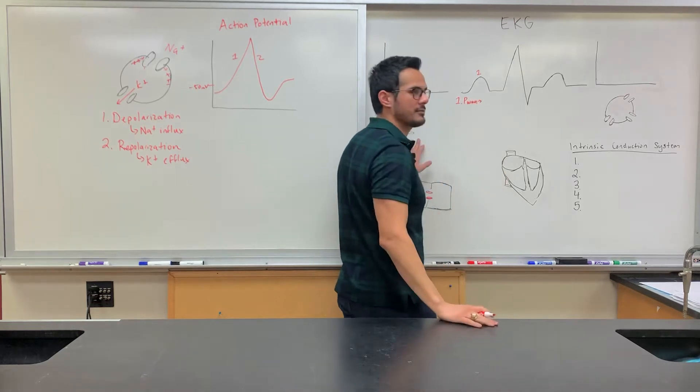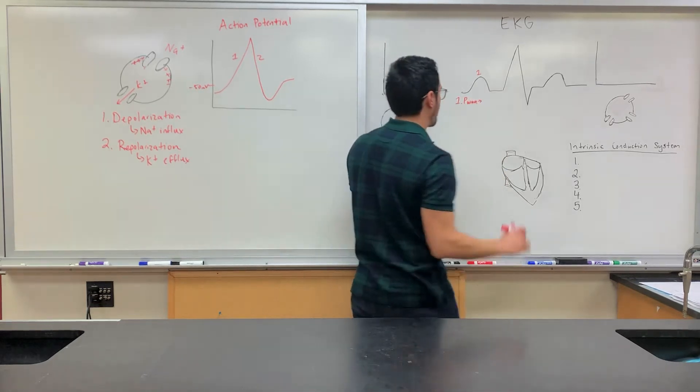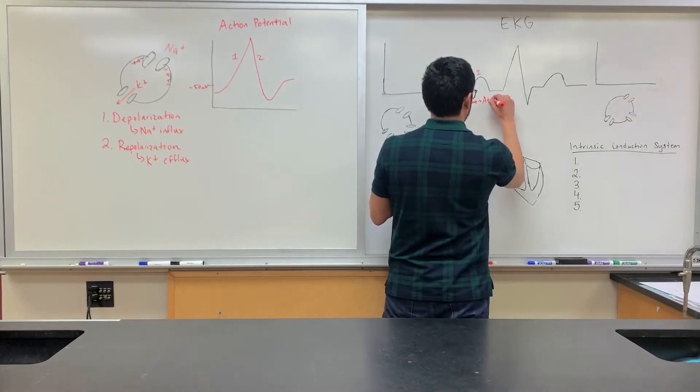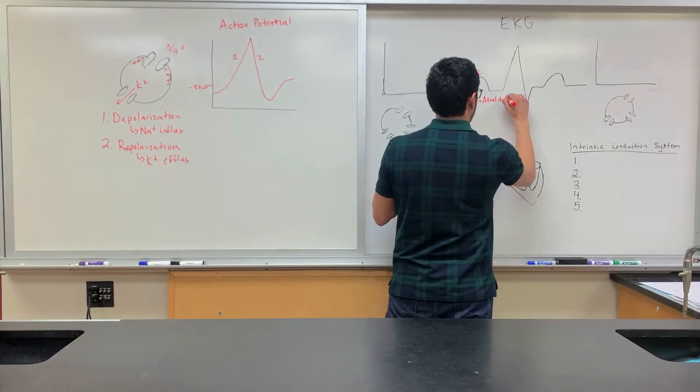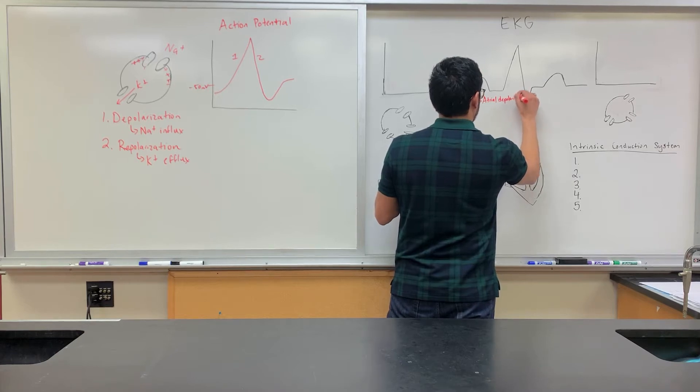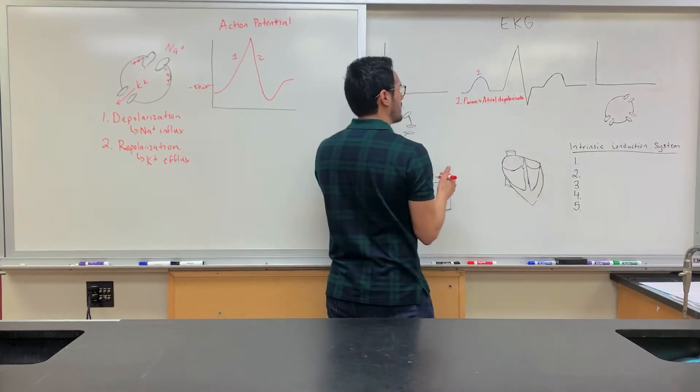What occurs during the P wave? Atrial what? Depolarization. Good. Alright, it's becoming more positive, the membrane potential is becoming more positive.